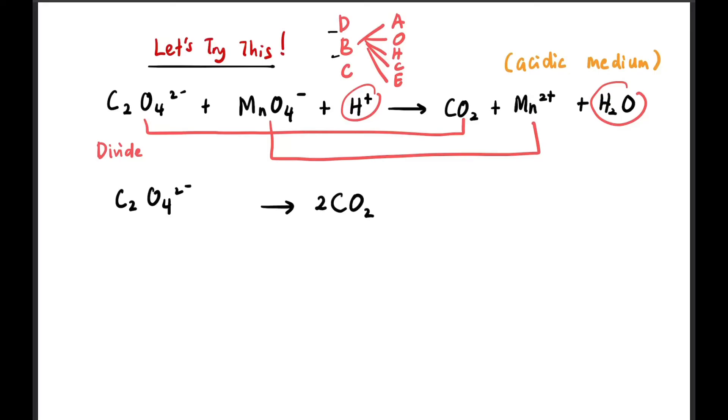So we balanced the carbon, 2-2. And oxygen automatically balances, 4-4. So we don't need to do anything more with the oxygen there. There are 4 oxygens on the left, 4 oxygens on the right. So now hydrogen doesn't need to add anything either.